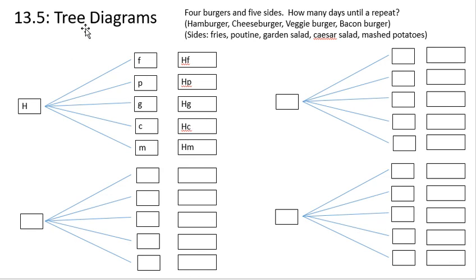And the HM is hamburger and mashed potatoes. So we have now five different outcomes that can take place. There are five different things that can happen where I have a hamburger. Hamburger and fries all the way down to hamburger and mashed potatoes. There are five of them there.